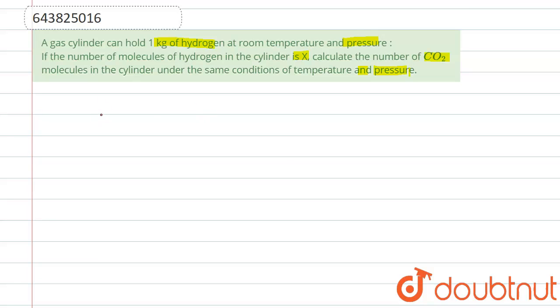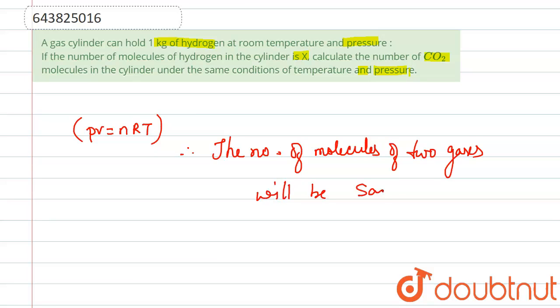From the ideal gas equation, PV = nRT. When pressure, volume, and temperature are constant, the number of moles of two gases will be the same. Hence, the number of molecules of two gases will be the same.